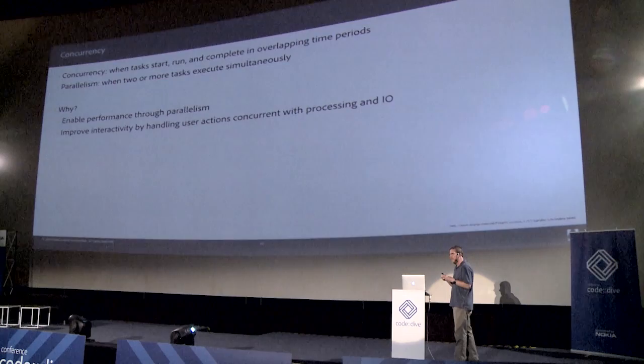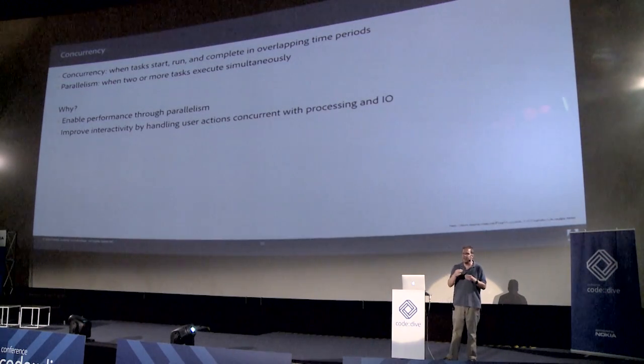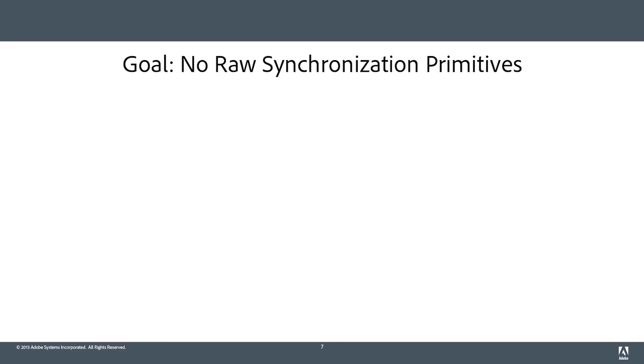Concurrency also allows you to improve interactivity, so you can build a usable application where the user isn't blocked from taking the next step. All of my talks have a goal, and this is the goal for today's talk: no raw synchronization primitives. All of my goals are stated as negatives — what not to do. They're non-prescriptive, they don't tell you what to do, and they're not rules or even guidelines. They are goals that are difficult to achieve. Achieving them will make your code better, but I cannot tell you how to do this in all circumstances.